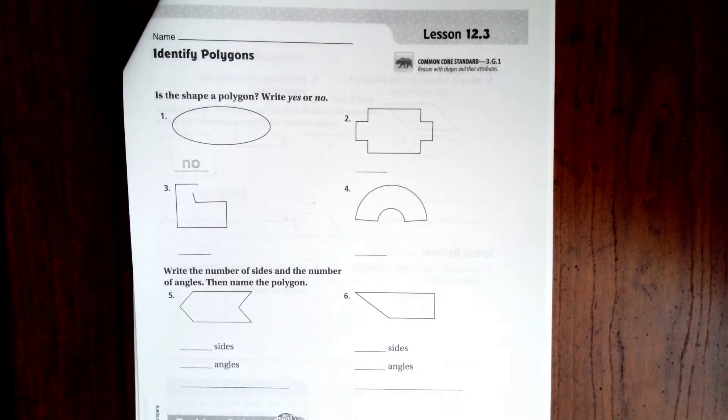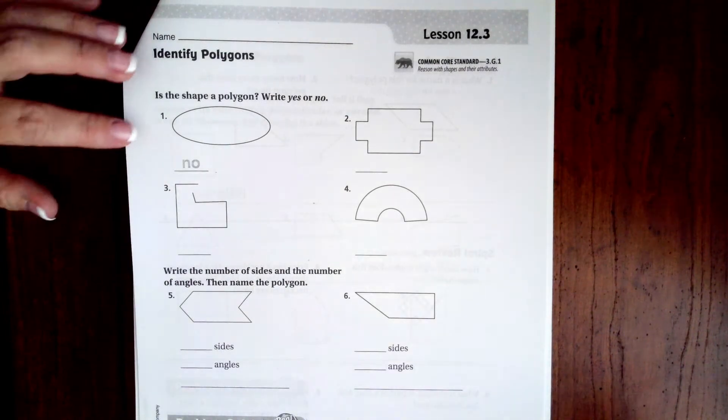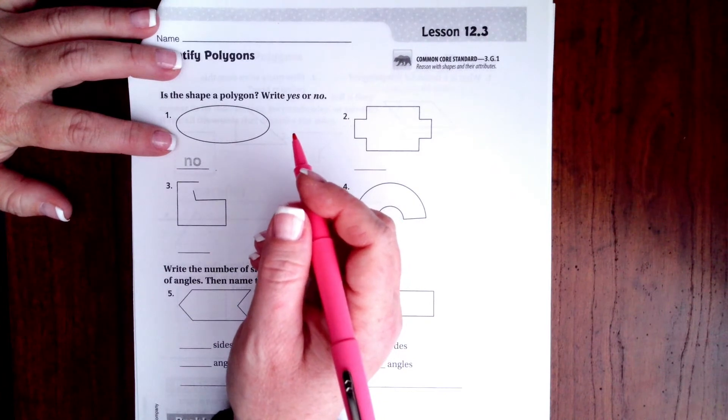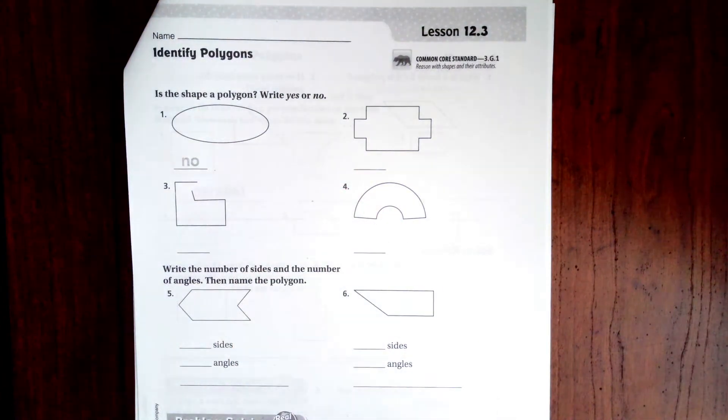Hi guys, welcome to third grade chapter 12 lesson 3. We're going to go ahead and get started. It says is the shape a polygon, write yes or no. Well, a polygon is defined as a closed plane shape that is made up of line segments, so you have to have straight lines and they meet up only at their endpoints.